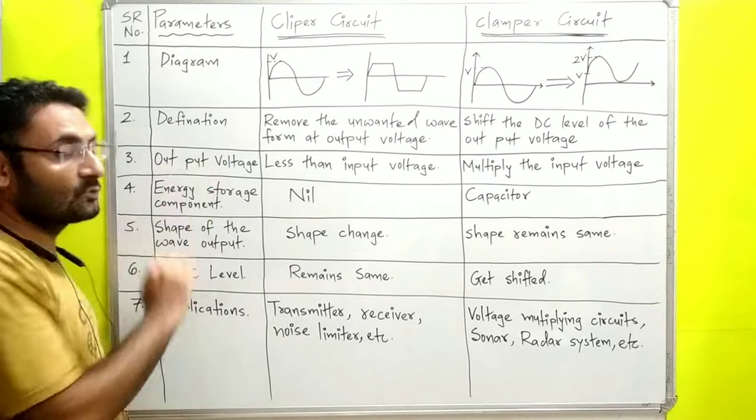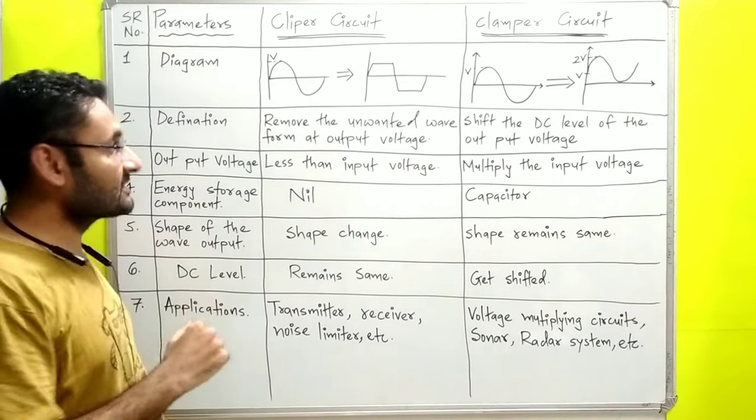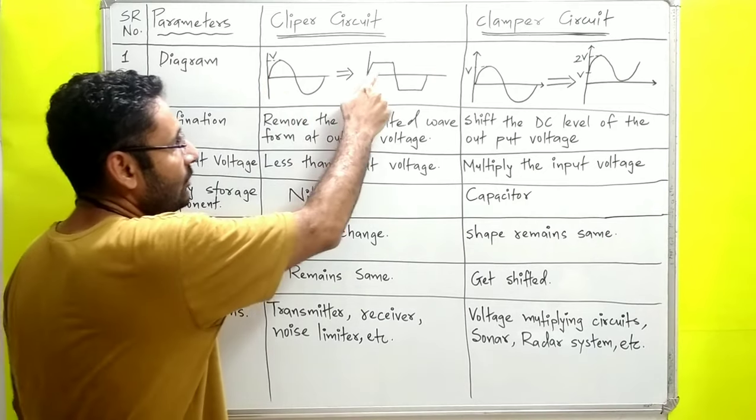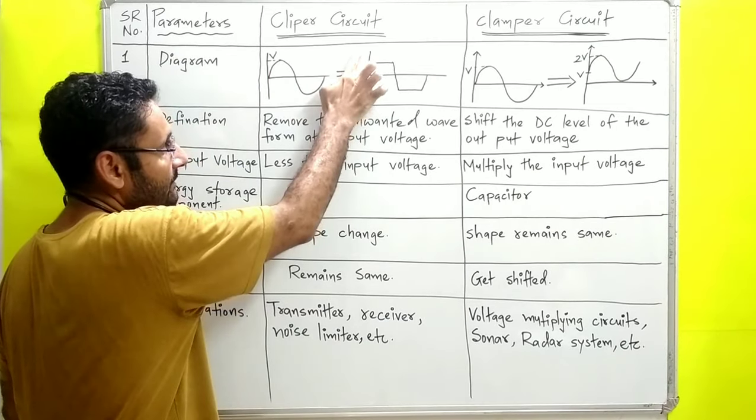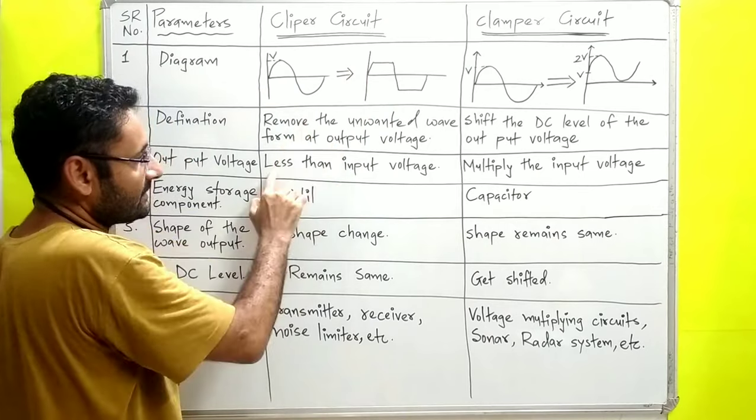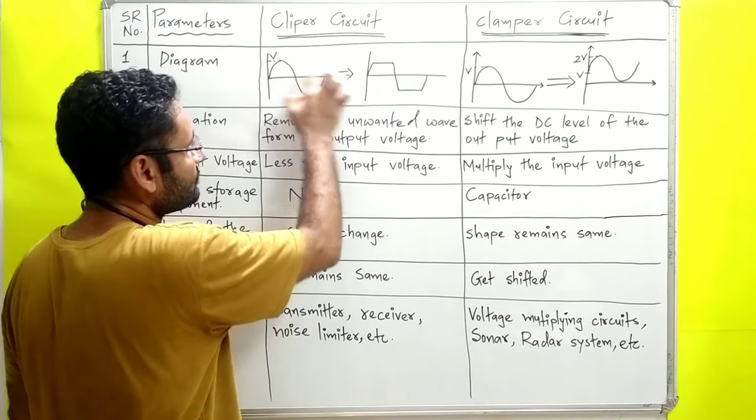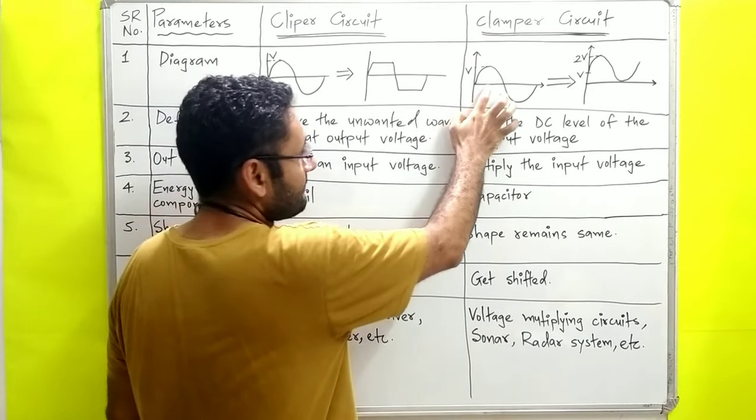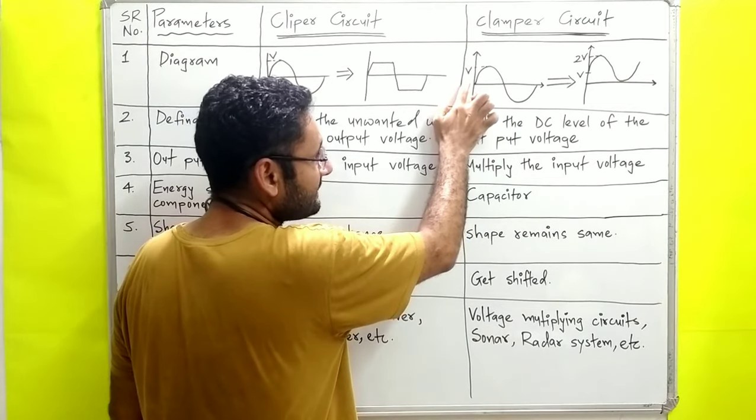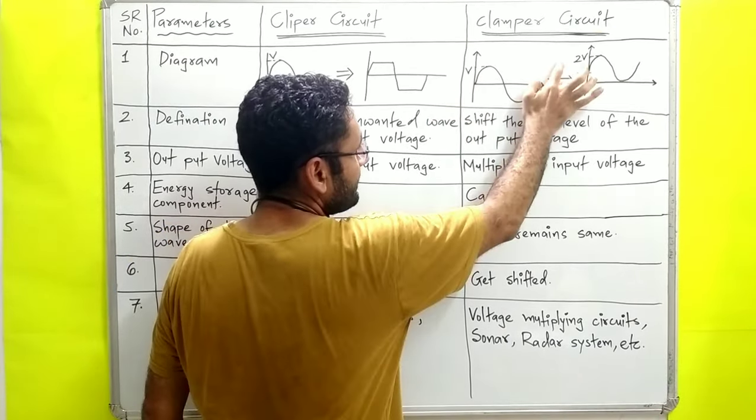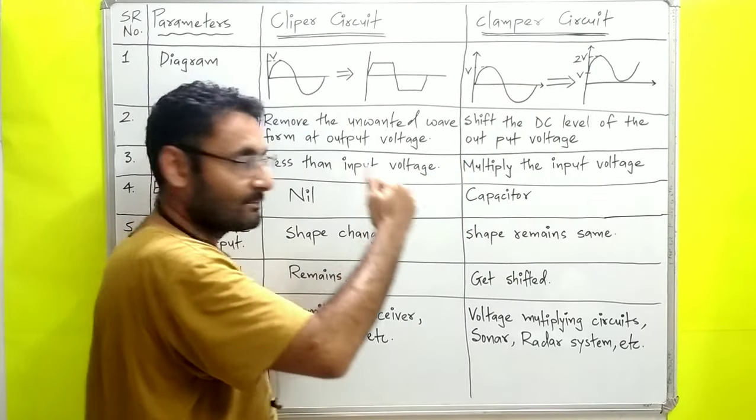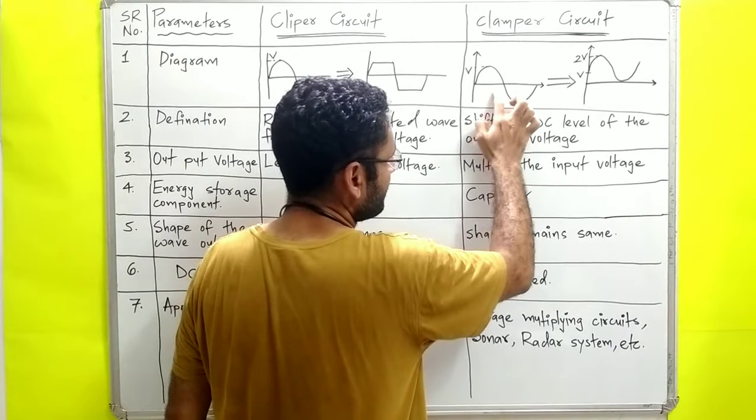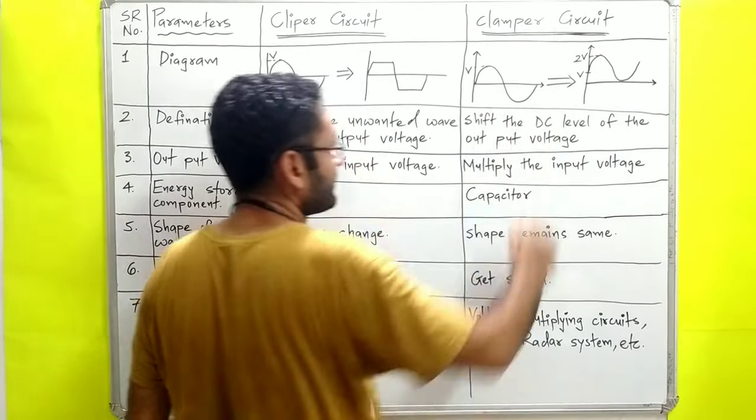The third parameter is the output voltage. In the clipper, the output voltage is less than the input voltage. In the clamper, the output voltage will multiply the input voltage.